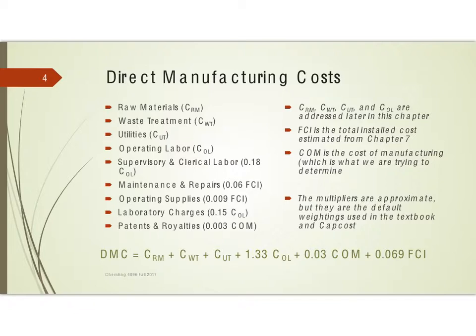If you combine all of the direct manufacturing costs, a formula can be used to approximate them, given at the bottom of the page. Recognize that there is a lot of estimation going into this — we're estimating how much raw materials, waste treatment, etc., are going to cost, and then we have multipliers that are an additional estimate.